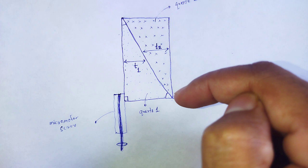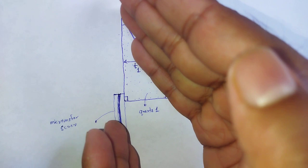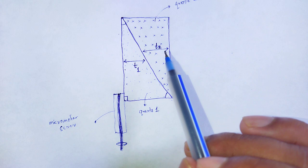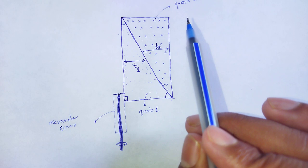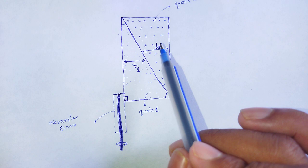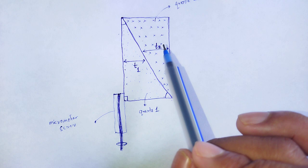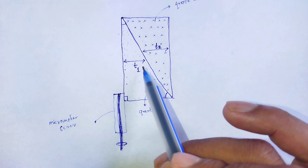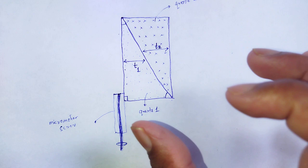Due to this construction, E ray and O ray are interchangeable in quartz crystal two. That is why, again, these two rays have different velocities in quartz two. Due to the variation in velocities, these two rays have their own path differences. By taking the mathematical analysis of the path difference between these two rays, the resultant path difference for quartz one and the path difference for quartz two can be mathematically calculated.